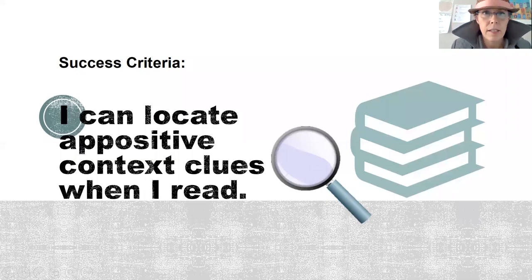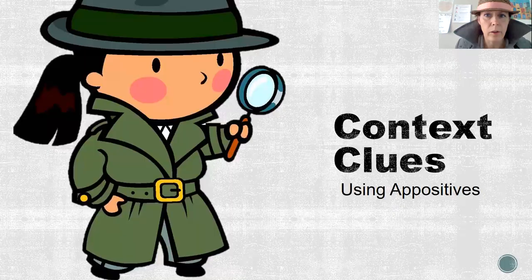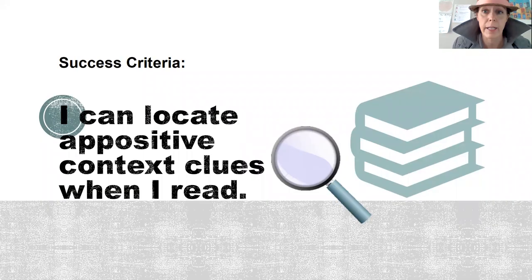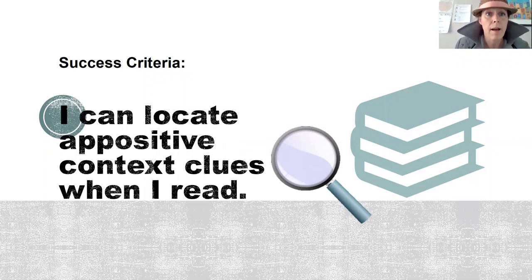Hi, this is Detective Berenger here. Today we are going to talk about context clues and using appositives as a way to figure out what things mean in what we're reading. Our success criteria is that I can locate appositive context clues when I read.